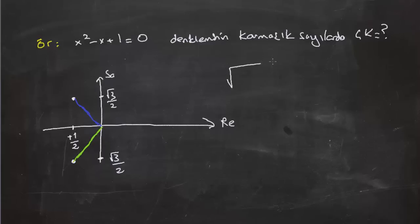Boy hesabı yaparken: (1/2)² + (√3/2)², eksi de olsa artı da olsa fark etmeyeceği için iki kökün de boyu aslında aynı. 1/4 + 3/4 kök içerisinde, bu da bir ediyor.